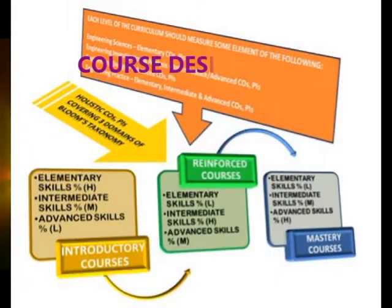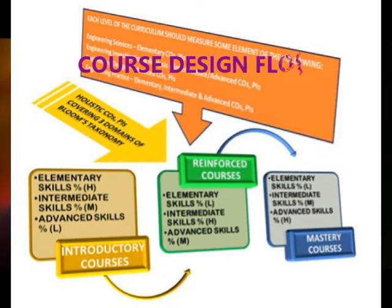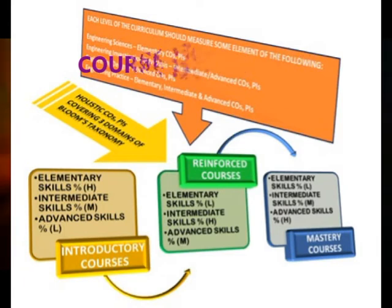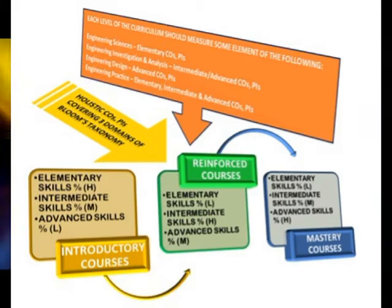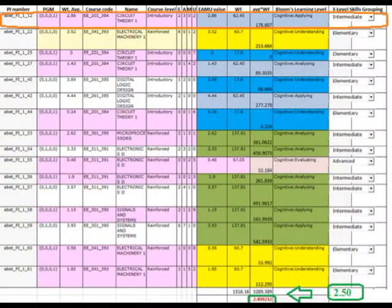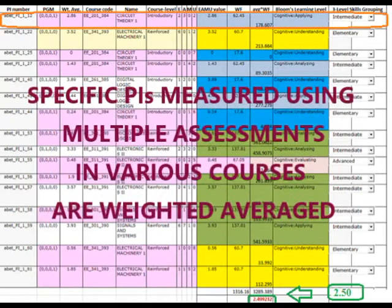introductory courses should have a high proportion of elementary and intermediate level skills, whereas master-level courses should have a high proportion of advanced level skills. ABET SO values are computed by weighted averaging their several specific PIs, measured using multiple assessments in various courses for a given term.